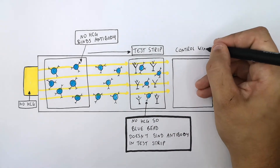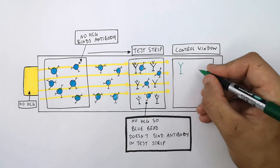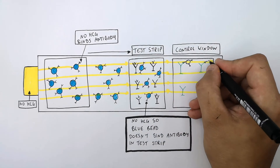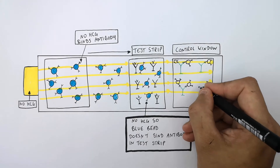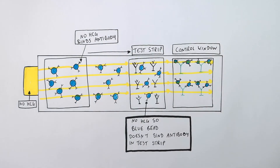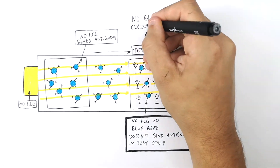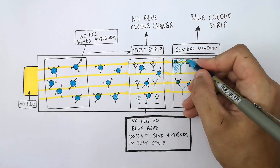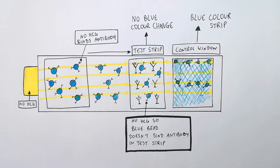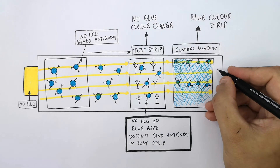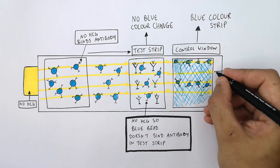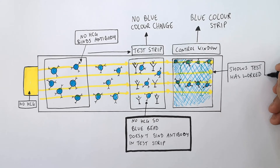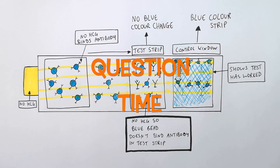The beads are then transported into the control window, and the antibodies on the blue beads bind the antibodies stuck down in the control window, turning the control window blue. So the woman is not pregnant — there is no blue colour change in the test strip, but the control window has turned blue, which confirms the test has worked. If it didn't turn blue, she should throw it away and use another one.